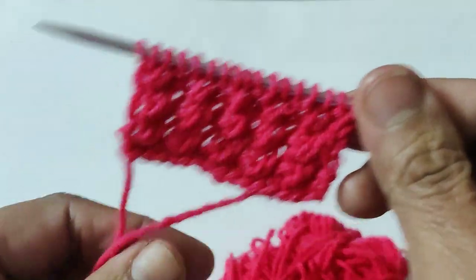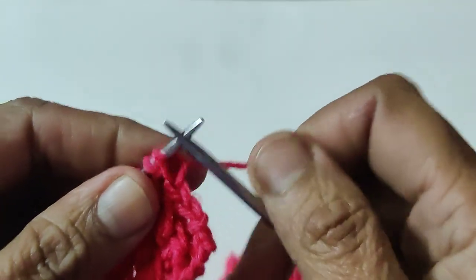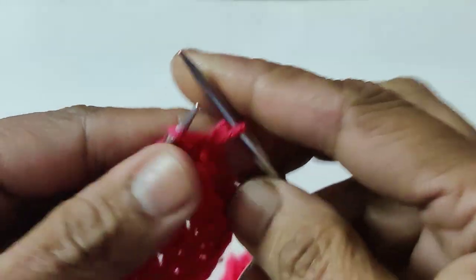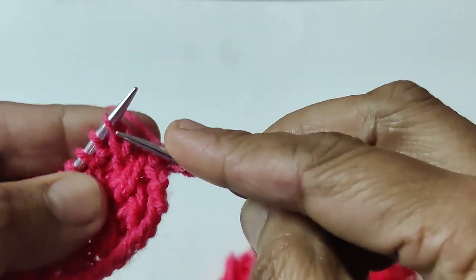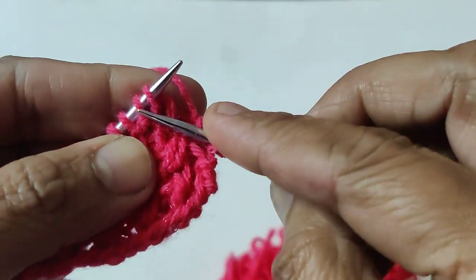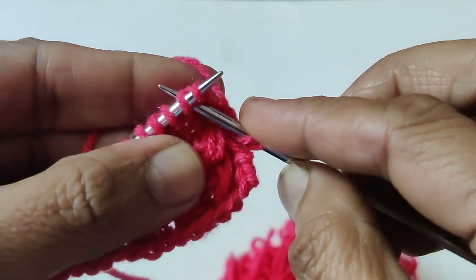To make this pattern, we need to remove the edge. One stitch is done. The first stitch is done. These are the two stitches, first and second. We knit the second stitch.